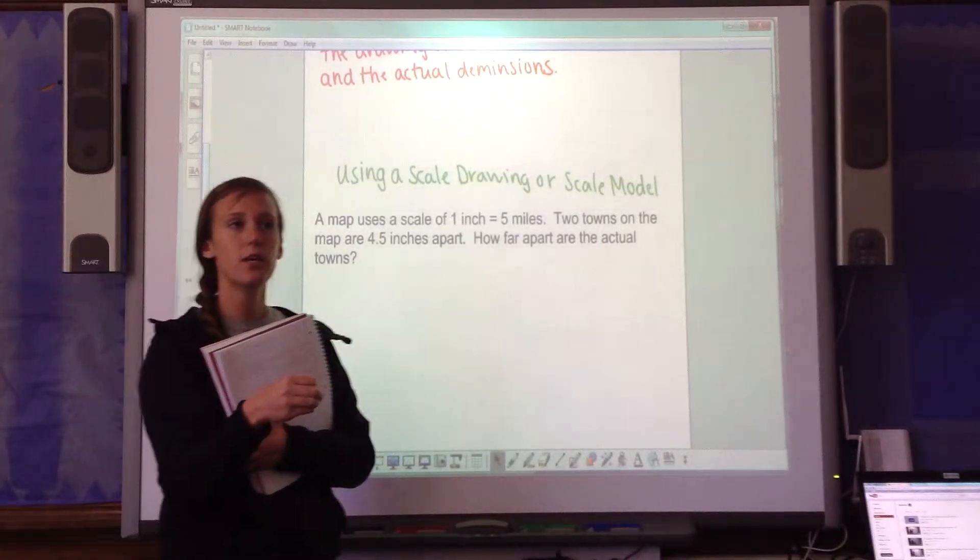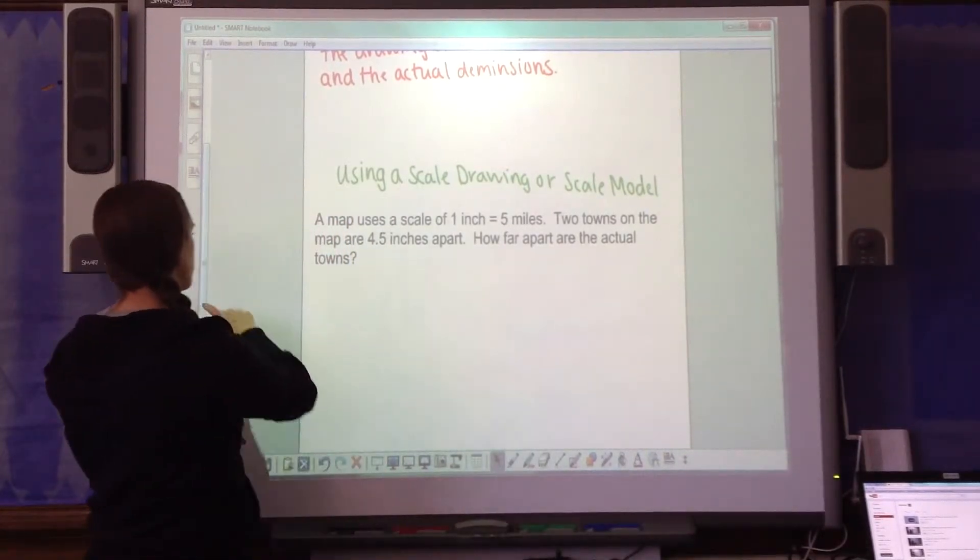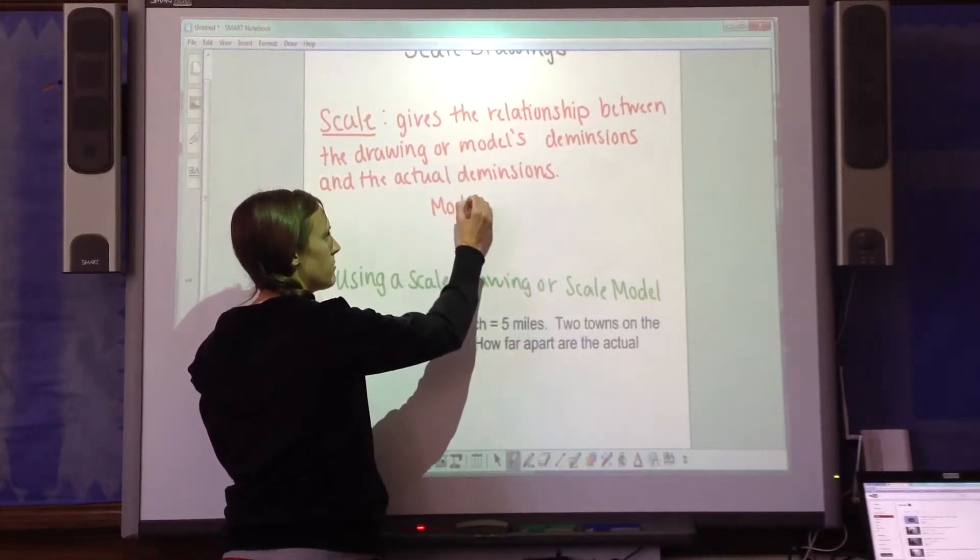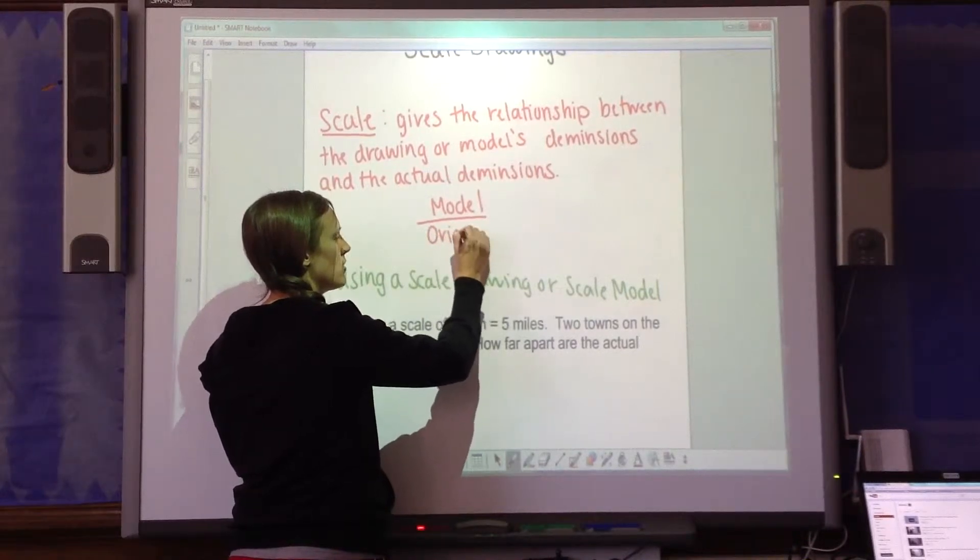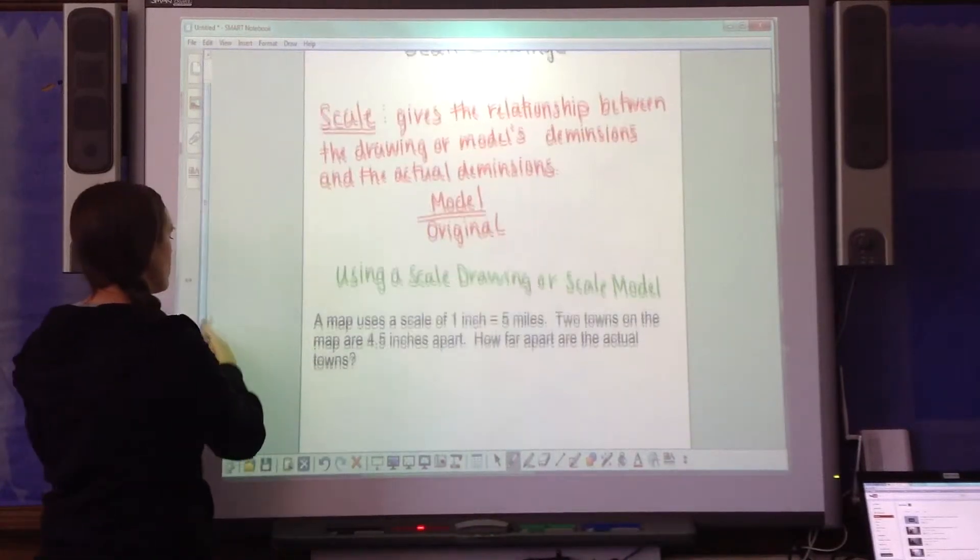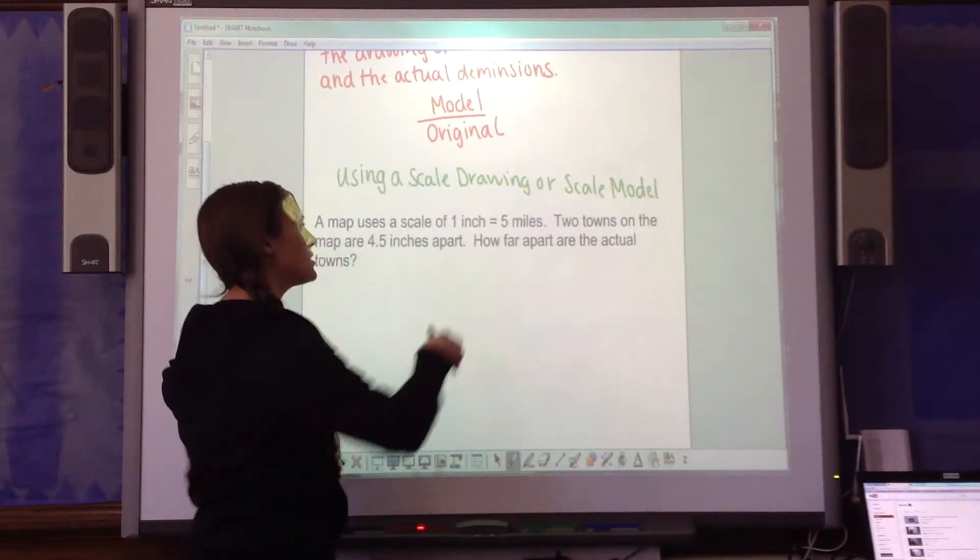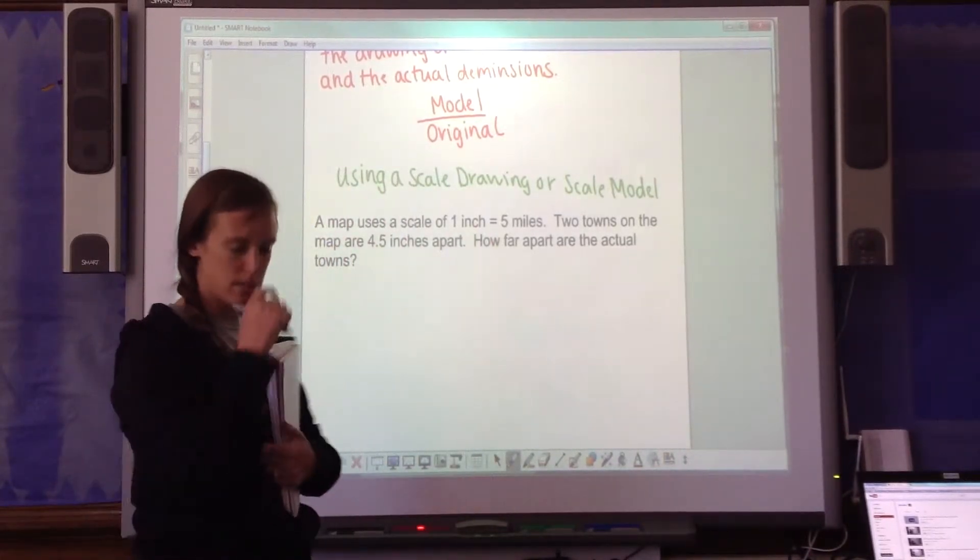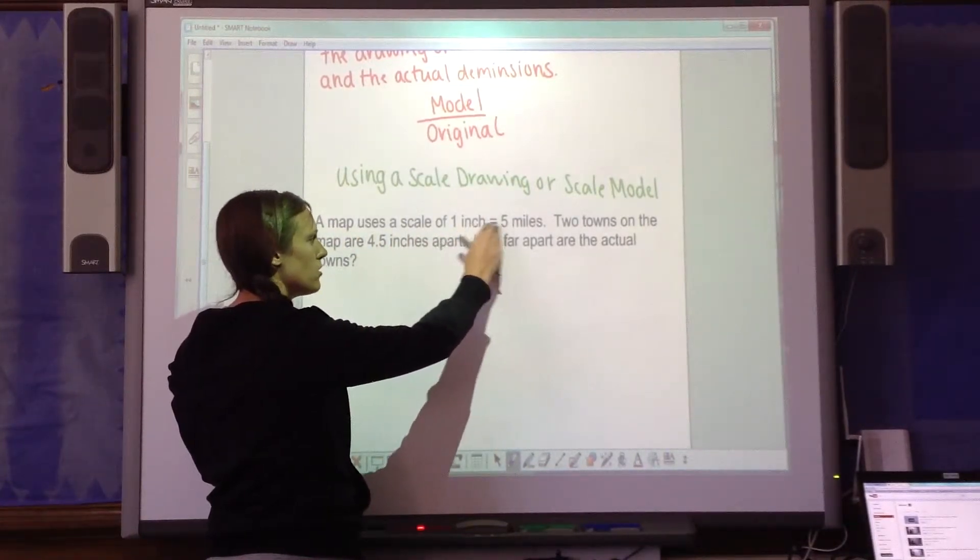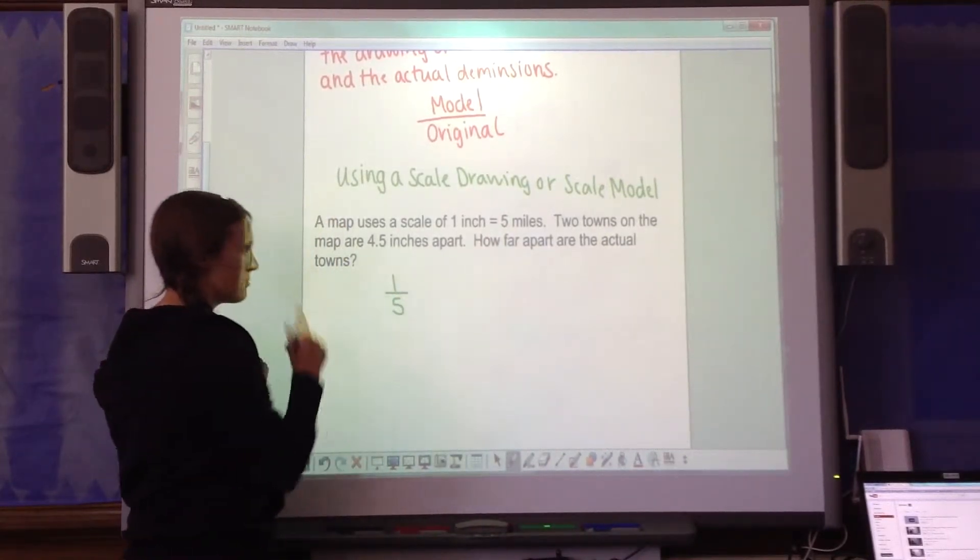There is one common proportion that you're going to be thinking for this whole lesson. You're always going to want to be thinking model over original. In fact, it's so important, you might want to add it somewhere on top of your notes. It's model over original. It's always the order that you're going to use. Remember that ratios would be represented in three different ways. You're going to be using fractions again here. This ratio is separated by an equal sign. The scale ratio model over original. So that's half of the ratio that you're going to use, or one of the ratios you're going to use for your proportion.